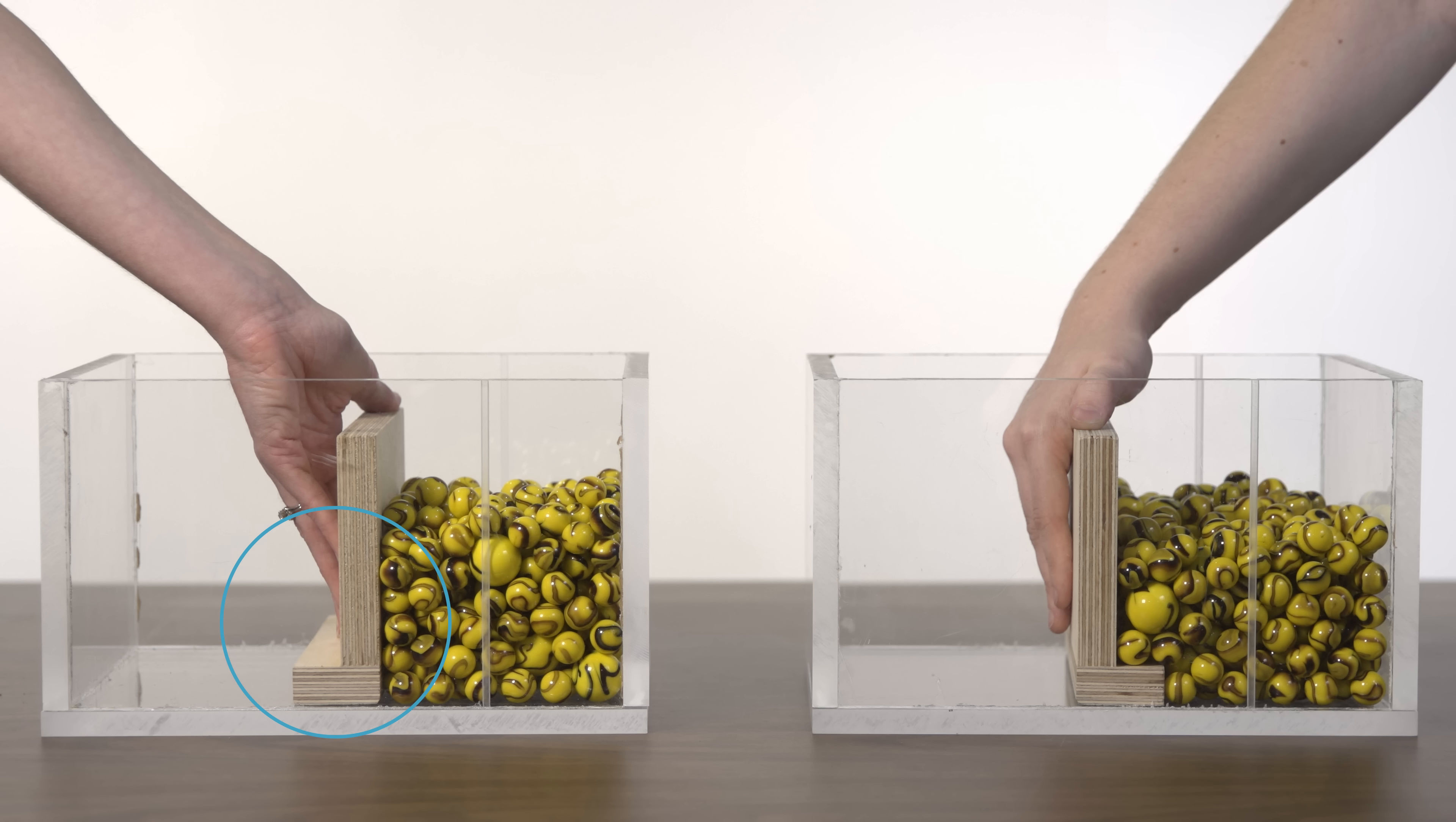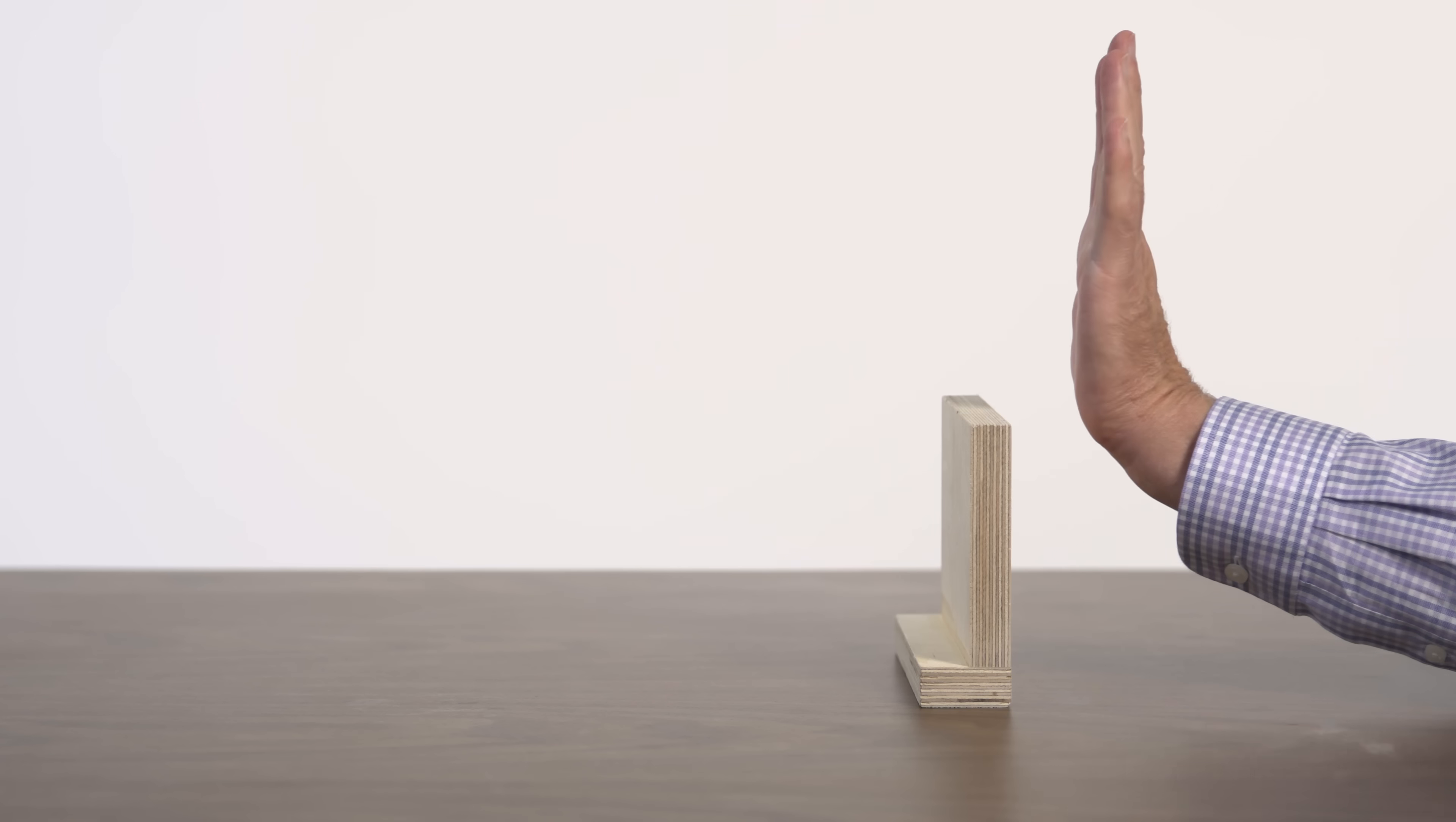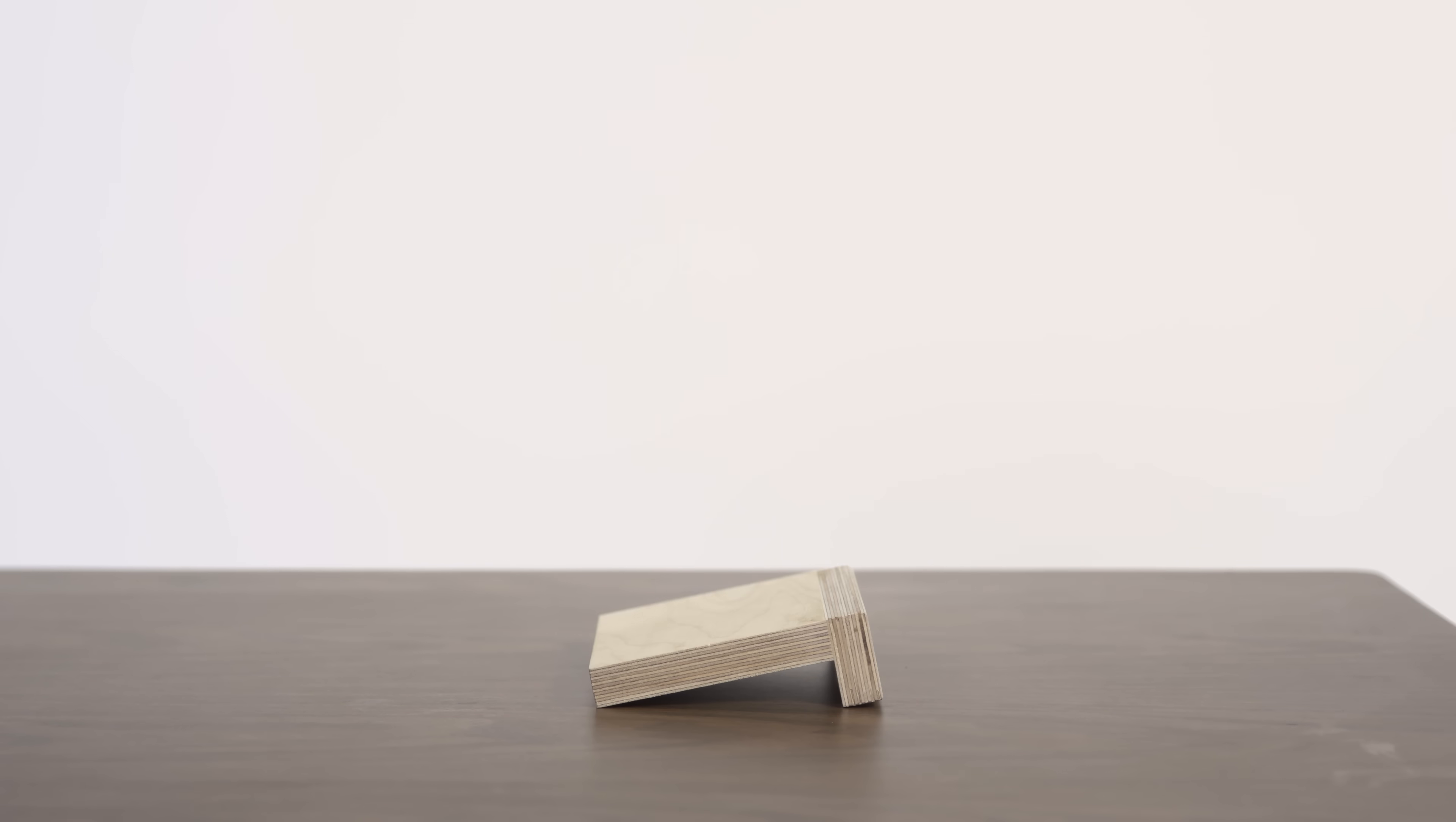Many people would say that the base of the L should face away from the marbles. They probably realize that it is hard to tip the wall over towards the left if the bottom leg points in that direction. In engineering, we call tipping like this overturning. If the bottom leg points the other way around, it is easy to make the wall overturn.